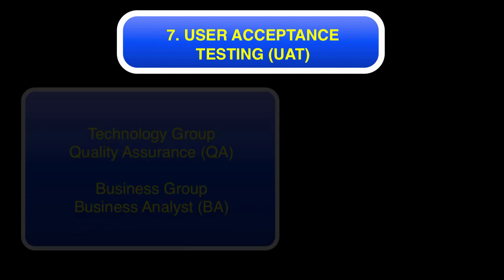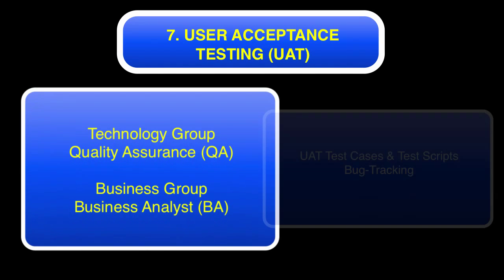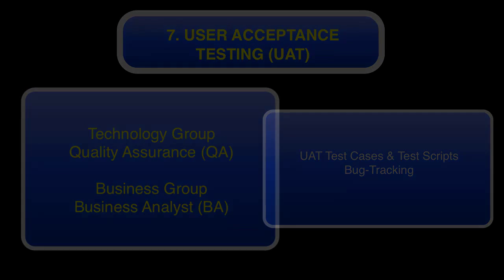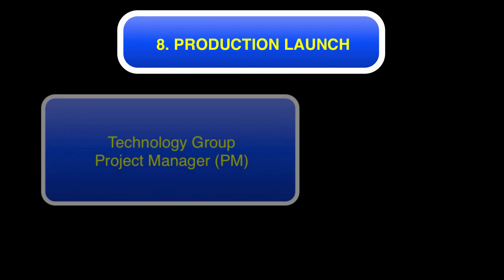That leads us into user acceptance testing. We move from the technology group back to the business group. The QA team has to sign off on unit and integration testing before UAT begins. The business analyst has to create a full user acceptance test plan mirroring all their business requirements. They have to include all the test cases and test scripts and use the bug tracking database to enter any issues with business or user acceptance testing.